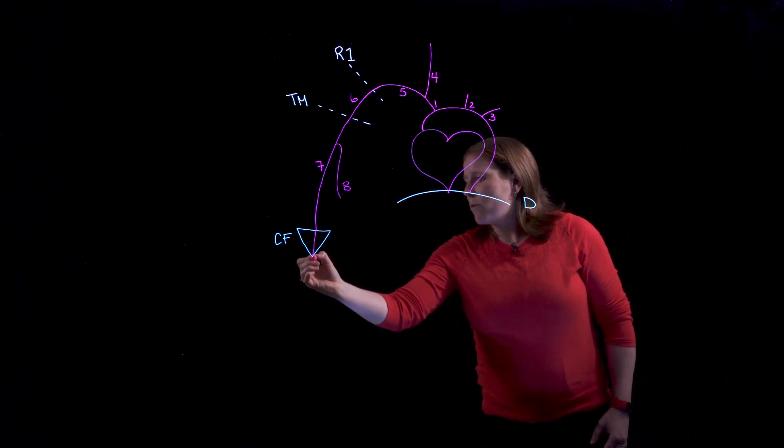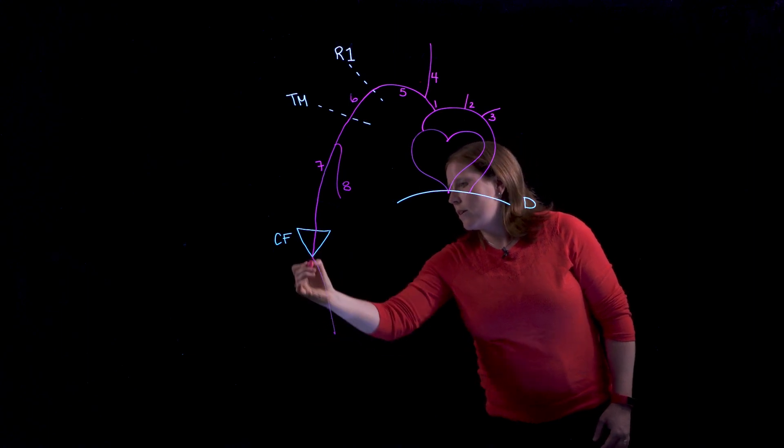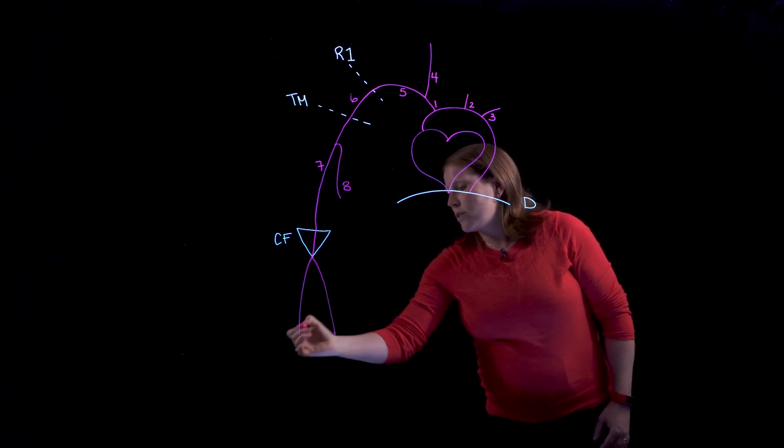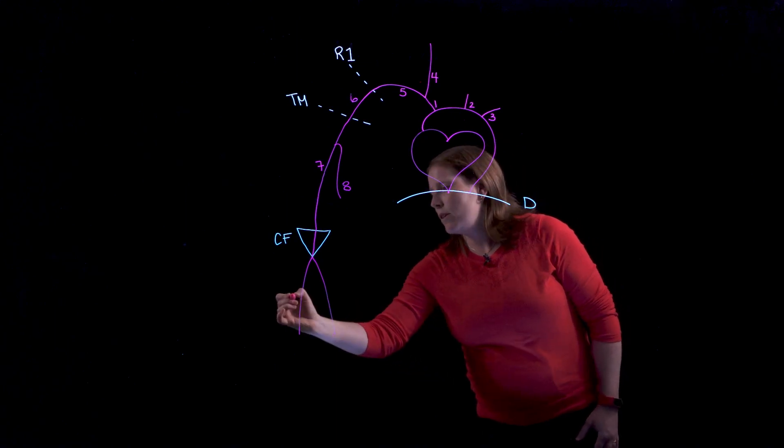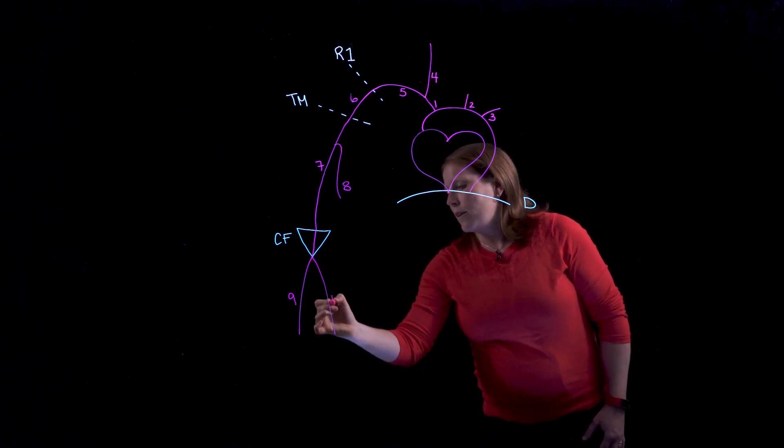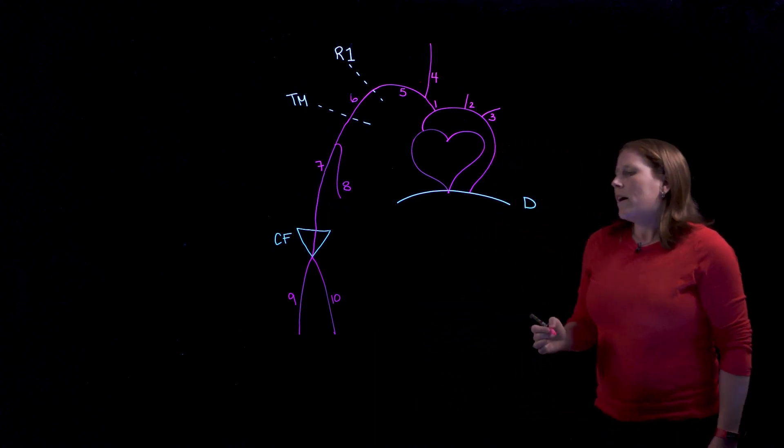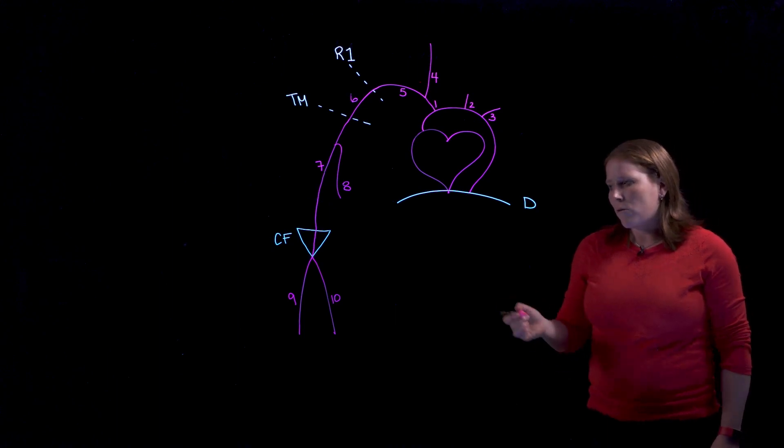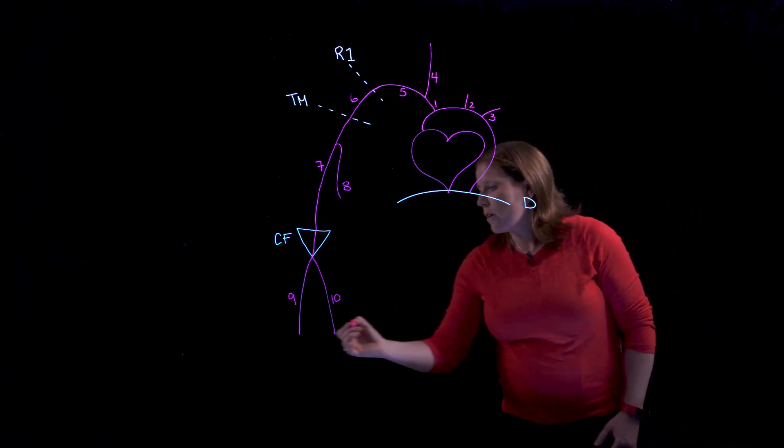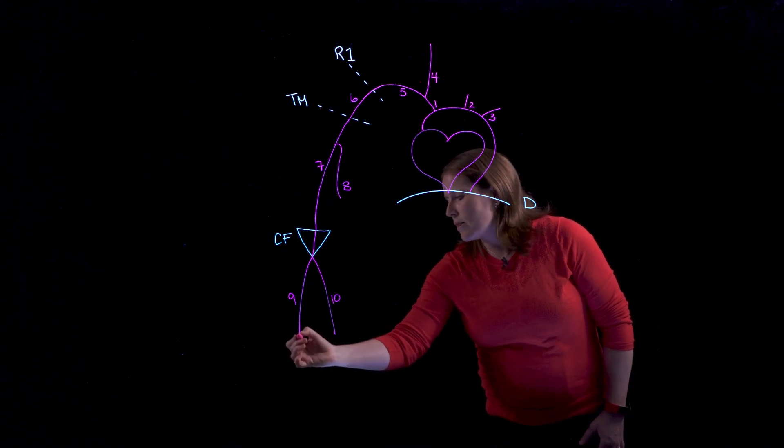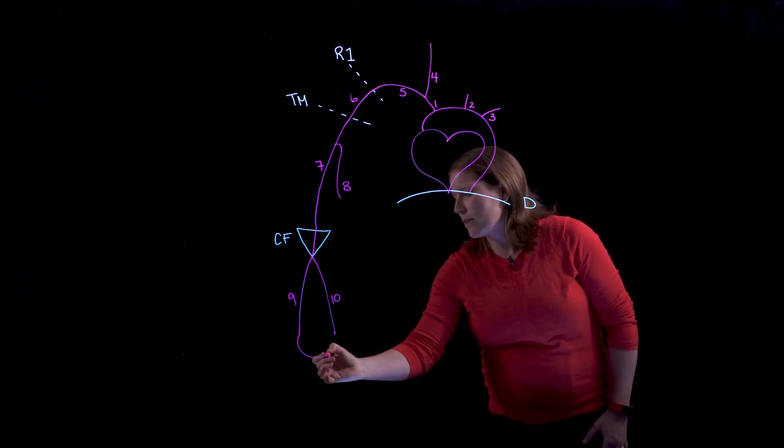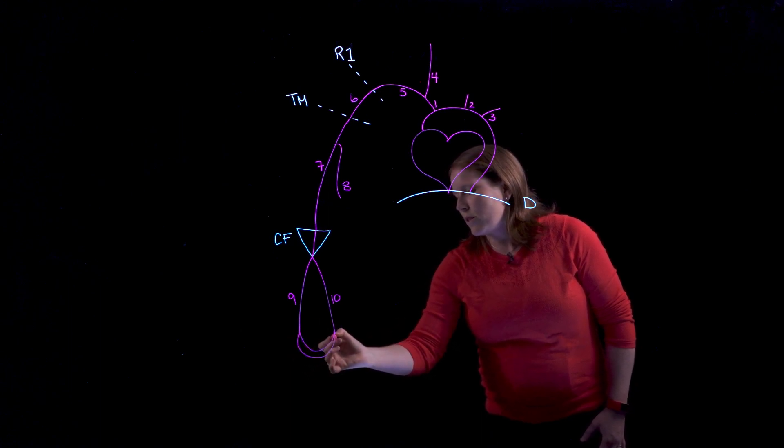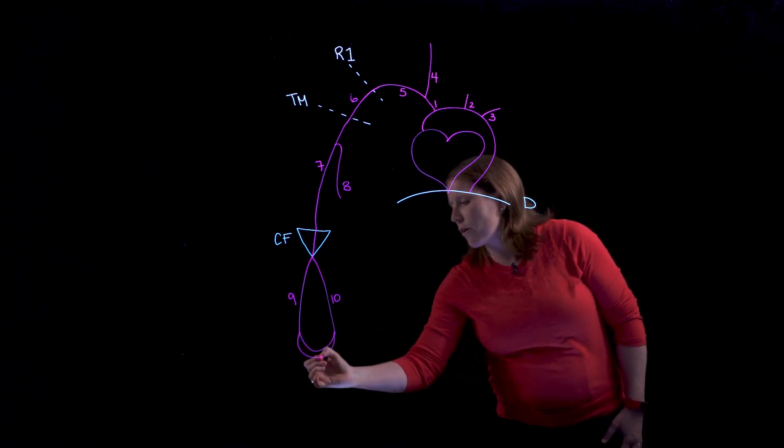Just distal to the cubital fossa the brachial artery is going to split into two branches. We can label these number 9 and number 10. On the lateral side we're going to have the radial artery and on the medial side we'll have the ulnar artery and these terms correspond to the bones in the forearm. Once we get down to the hand these arteries will each give rise to a palmar arch that anastomosis or feeds back into the other artery.